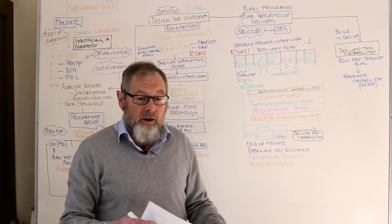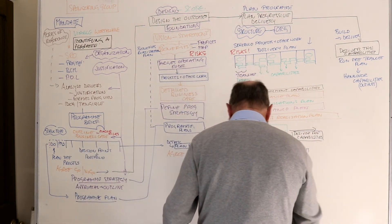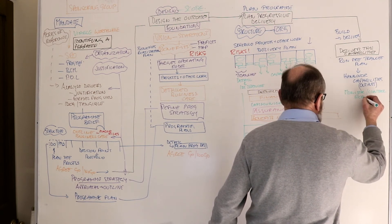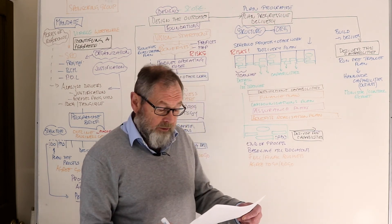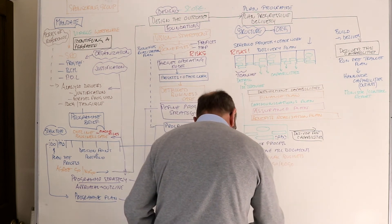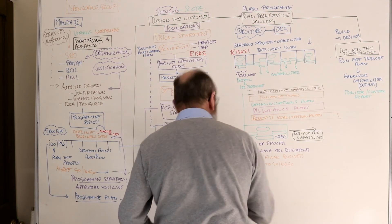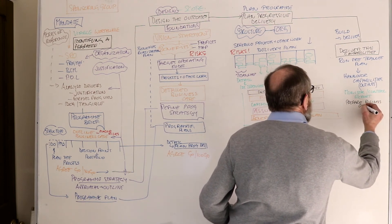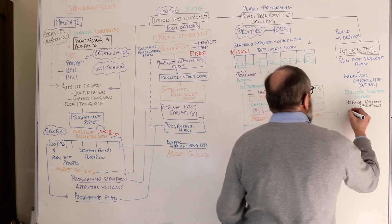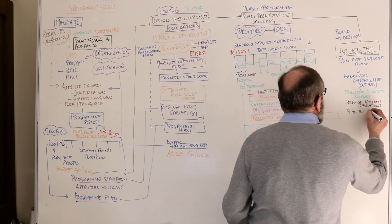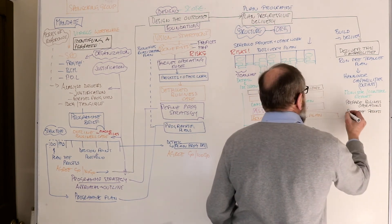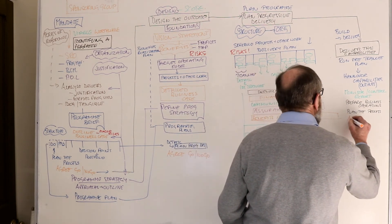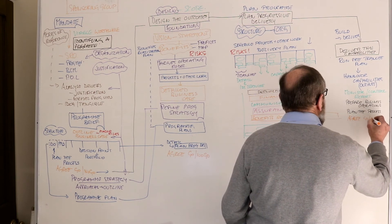The handover triggers the next process: embed the outcomes. During this whole area, we're going to be monitoring and controlling and reporting on progress. Towards the end, we're preparing the business environment — business operations — ready for transition. Then we plan and prepare the next process, and agree to go or no-go at this point as well.